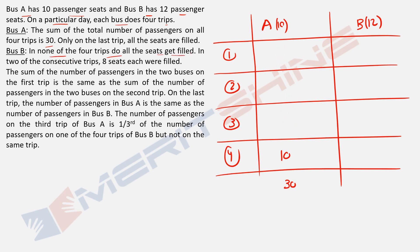Now the data about Bus B: in none of the four trips do all the seats get filled, meaning each value is less than 12. In two consecutive trips, eight seats each were filled. So I place 8, 8 somewhere — but I don't know exactly where yet. It could be trips 1&2, 2&3, or 3&4.